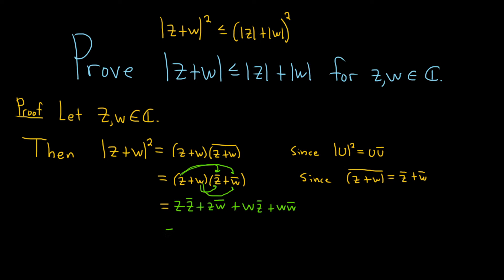Now we can use the property we already used: z times z-conjugate becomes the modulus of z squared. I'm going to keep the z times w-conjugate term the same, and then for w times z-conjugate I'll put z-conjugate in front — that's by commutativity — giving z-conjugate times w. And on the last term, w times w-conjugate becomes the modulus of w squared.